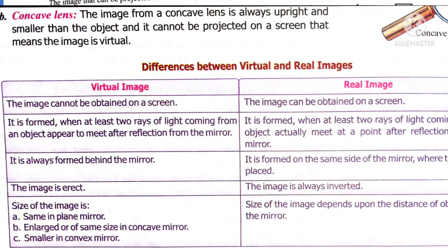Virtual image is always erect, while real image is inverted. The size of the virtual image in a plane mirror is the same. In a concave mirror, the virtual image is enlarged or of the same size. In a convex mirror, the virtual image is smaller. For real images, the size depends upon the distance of the object from the mirror. Virtual image is formed when at least two rays of light from an object appear to meet after reflection, whereas in a real image the two rays actually meet at a point after reflection.